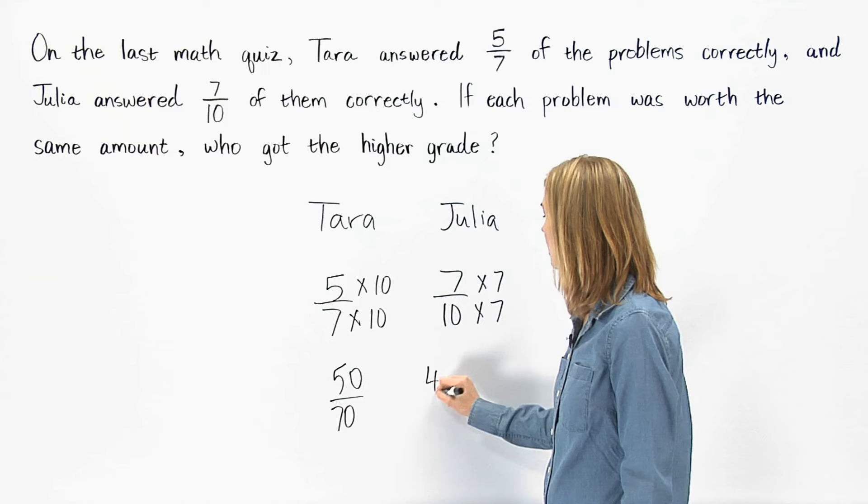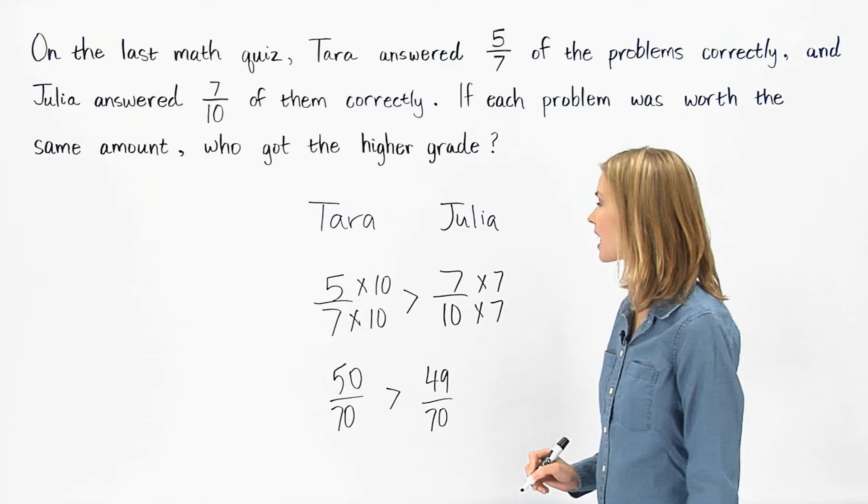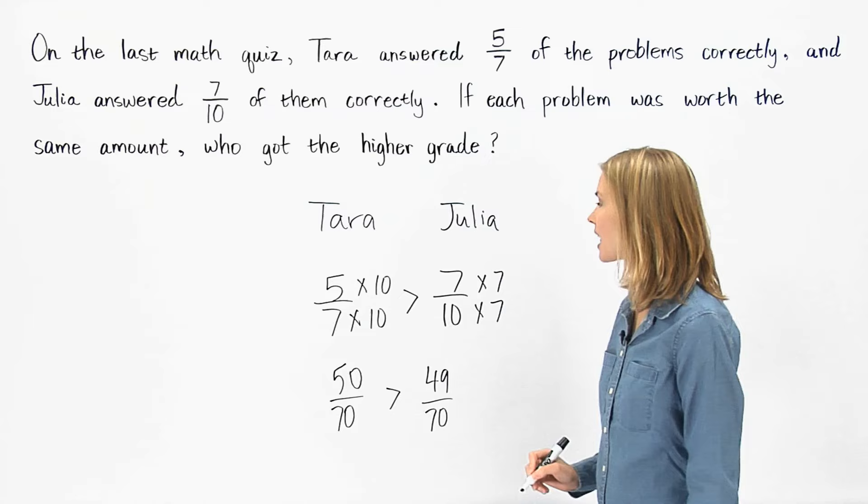Since fifty over seventy is greater than forty-nine over seventy, five-sevenths is greater than seven-tenths. So Tara, who answered five-sevenths of the problems correctly, received the higher grade.